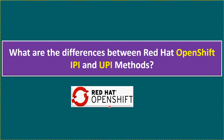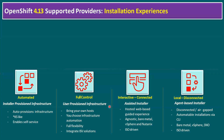One common question is: what are the key differences between IPI (Installer Provisioned Infrastructure) and UPI (User Provisioned Infrastructure) methods? Before jumping to the differences, let's quickly recap what OpenShift 4.13 supported providers and installation experiences are. Within 4.13 the installation experiences include four methods: automated (IPI), full control (UPI), interactive connected — also called the assisted installer.